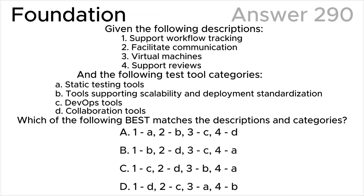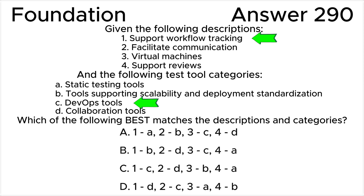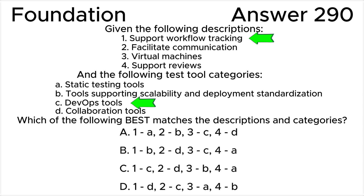Let's look at all the descriptions from one to four and all the test tool categories from a to d. Considering each of the listed tool categories and their descriptions: statement one — support workflow tracking — corresponds to DevOps tools (c). DevOps tools support the DevOps delivery pipeline, workflow tracking, automated build processes, and continuous integration/continuous delivery (CI/CD).